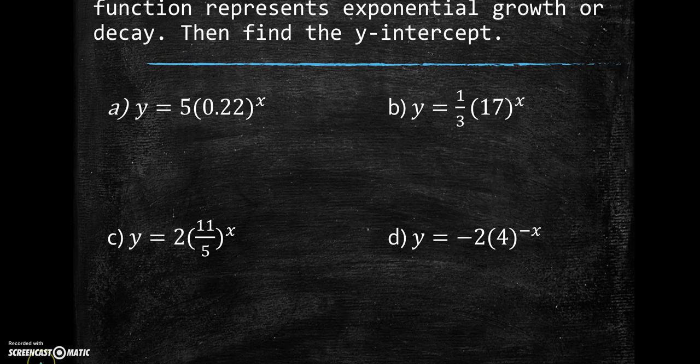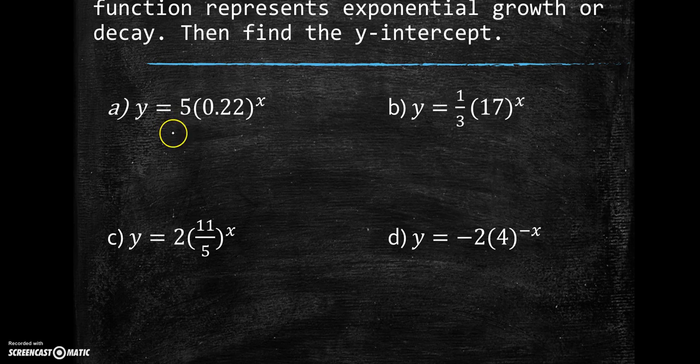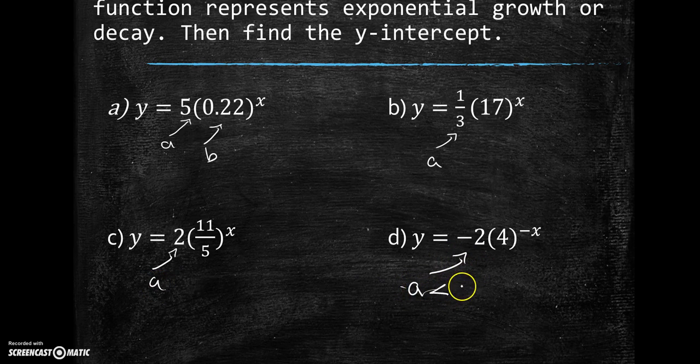So without graphing, we are going to determine if the function represents exponential growth or decay. Then we're going to find the y-intercept. This is where we're looking at our a and our b values. Remember what the value of a needed to be and b needed to be. We have our a value and then our b is the one that has the exponent. In both exponential growth and decay, a needed to be positive. So we have positive here, positive here, positive here. And then the last one, a is less than zero, which means it's neither growth nor decay.